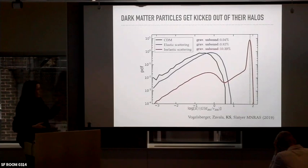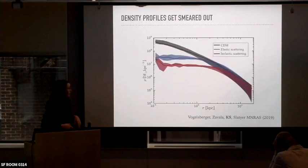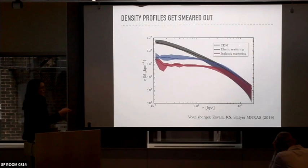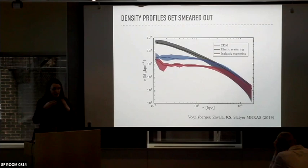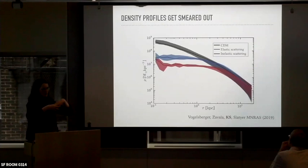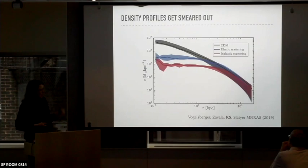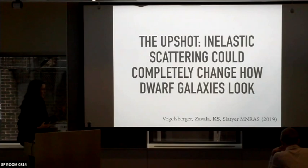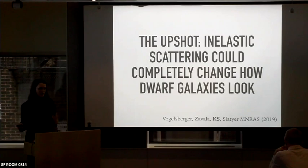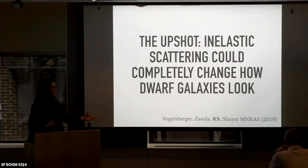Quantifying this by looking at the profiles of these subhalos: we know CDM produces a cusp in the center, and elastic scattering can core the profile. Inelastic scattering does an even more efficient job — those particles kicked out of the halo would have made the gravitational potential deeper, keeping other dark matter particles tightly bound. When you kick them out, the potential gets shallower, so the remaining particles are less tightly bound, giving you a bigger core. The upshot is that inelastic scattering could completely change how dwarf galaxies look. We want to keep exploring this: running more simulations, understanding how baryons affect the picture, and engaging with observers.